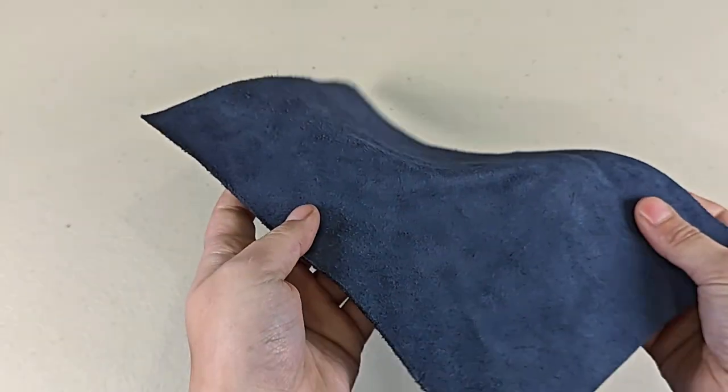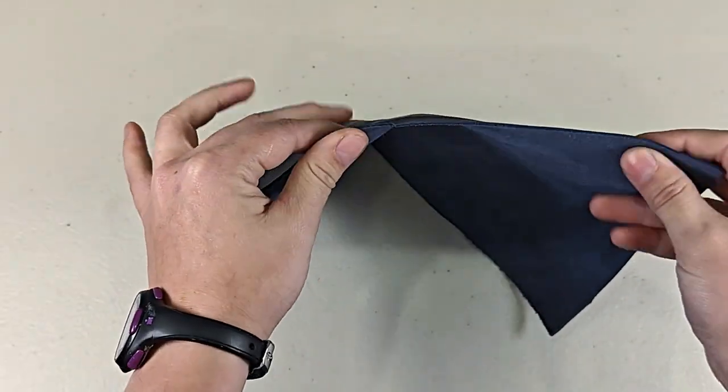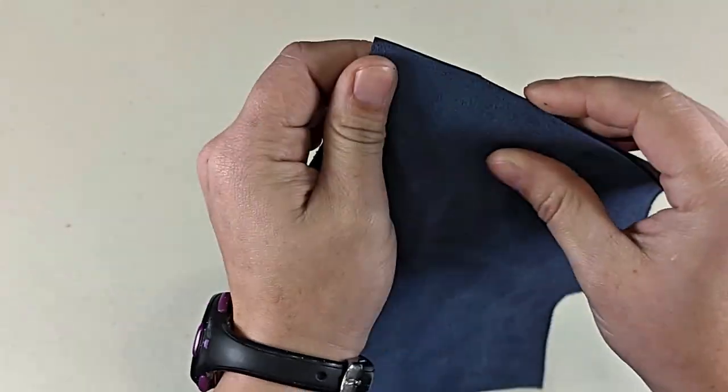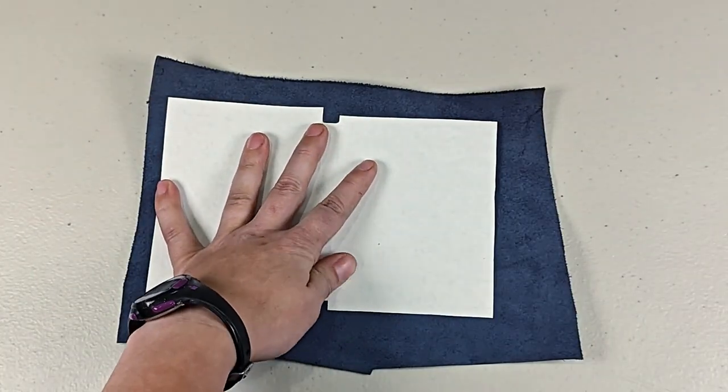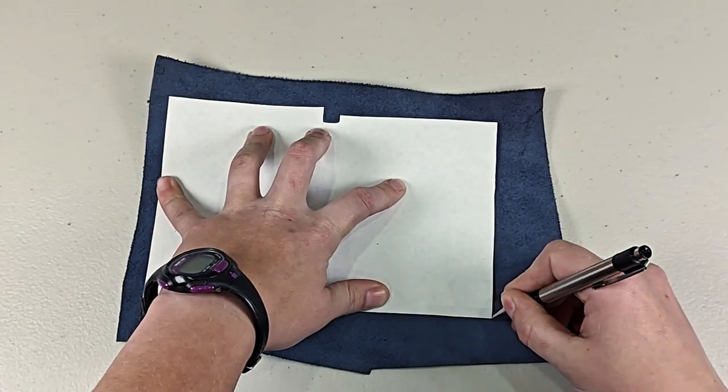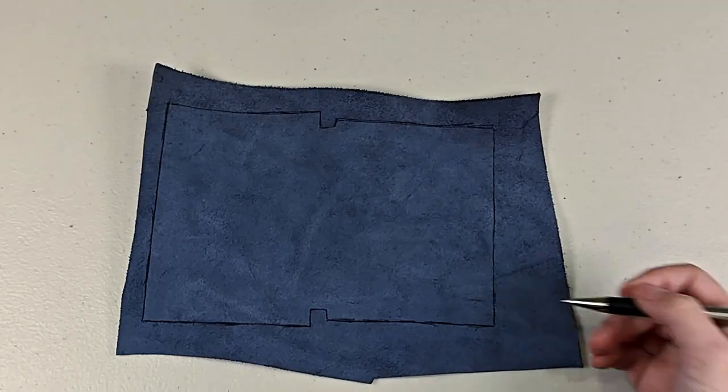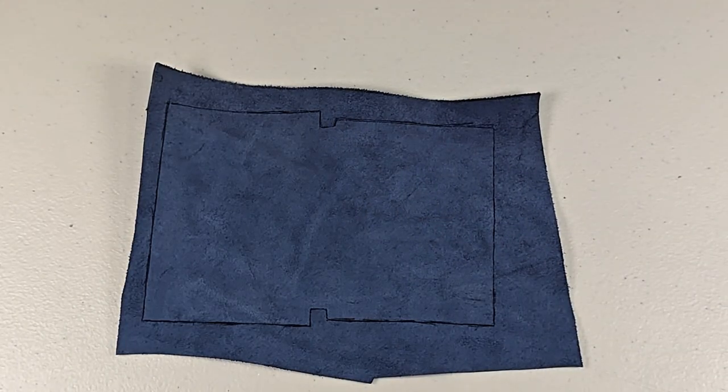This is my lovely navy blue leather, and it's relatively thick. It would be about a five or six ounce weight leather. I'm going to trace my pattern on the suede side of the leather using a black pen, and then I'm going to cut it out using scissors.